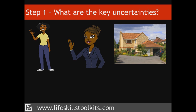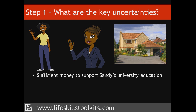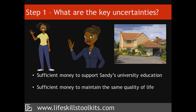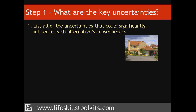Franny's decision objectives include having sufficient money to support Sandy's university education, having sufficient money to maintain the same quality of life she enjoyed before her divorce, and having financial peace of mind for the next three years so that she can concentrate on developing her part-time business into a full-time one. However, Franny's having difficulty reaching a decision because of the uncertainties surrounding her alternatives.